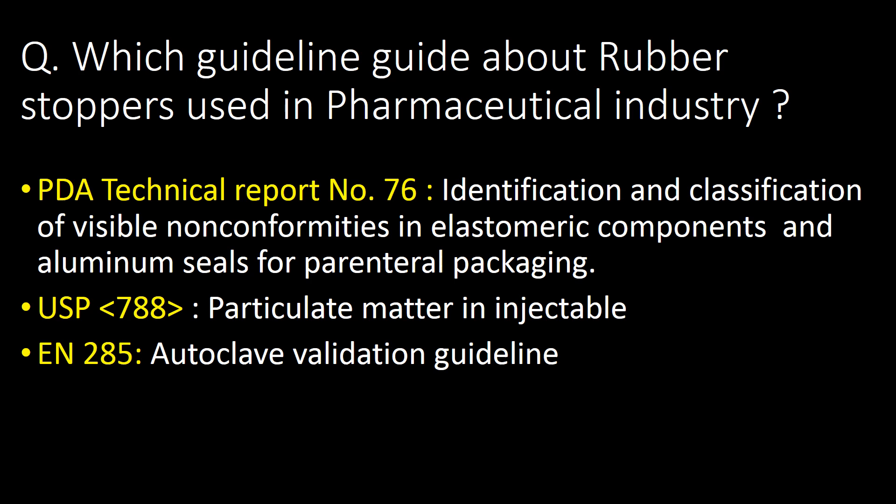Which guidelines govern rubber stoppers used in the pharmaceutical industry? PDA Technical Report Number 76 — identification and classification of feasible non-conformities in elastomeric components and aluminum seals for parenteral packaging — is the most commonly referred guideline. Along with this, USP Chapter 788 and EN285 are also referred to for rubber stopper handling in the pharmaceutical industry.